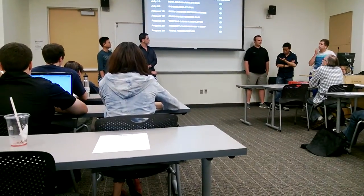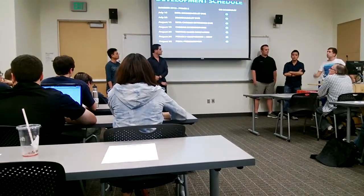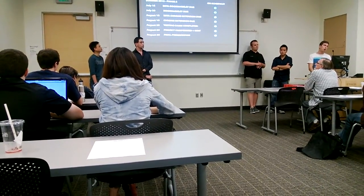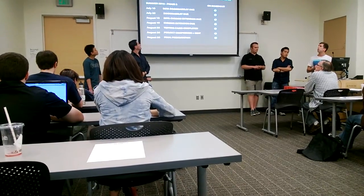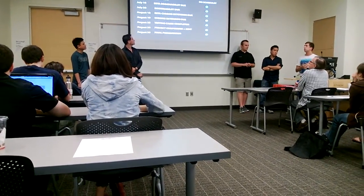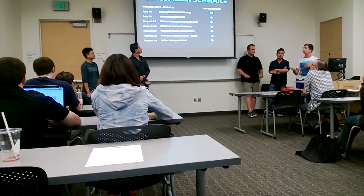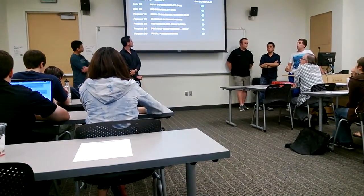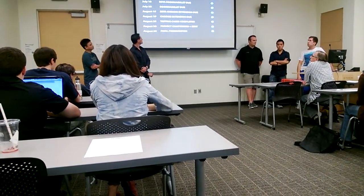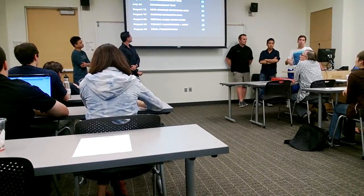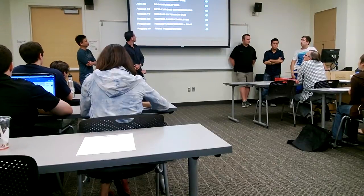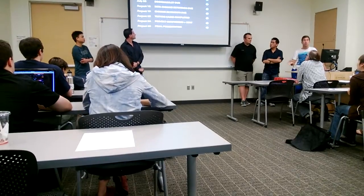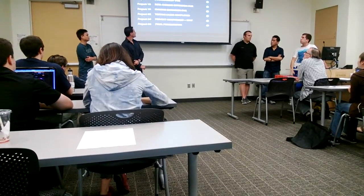Our development schedule is almost identical to what we presented during the midterm, except we added the completion and presentation portion. July 15th, a beta of the bookmarklet was due and completed. July 22nd, bookmarklet version 1.0 was due. August 12th, the beta Chrome extension was due. August 19th, the final Chrome extension version 1.0 was due. We beat all these deadlines by about a week, which gave us additional time for testing, which turned out to be extremely necessary.